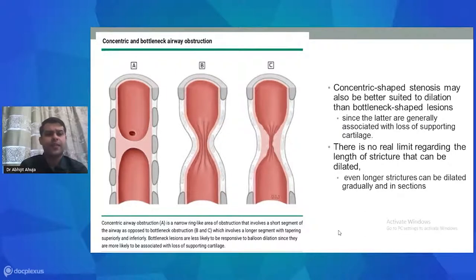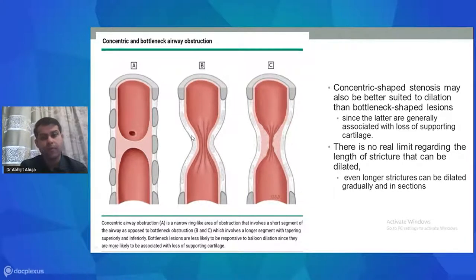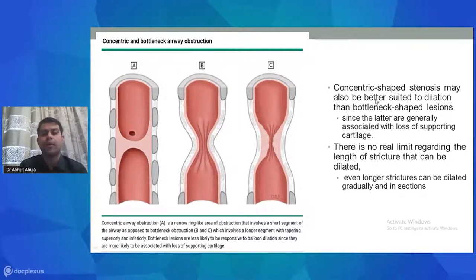Airway obstructions can be classified into concentric and bottleneck types. A concentric obstruction involves a narrow ring-like stenosis over a short segment, whereas a bottleneck obstruction involves a longer section with tapering superiorly and inferiorly. Bottleneck lesions are less likely to respond to balloon dilatation as they are more commonly associated with loss of supporting cartilage. When cartilage is intact, therapy applied within the airways is supported by it; if cartilage is lost, the dilated stricture will collapse back.